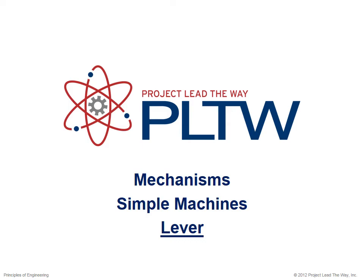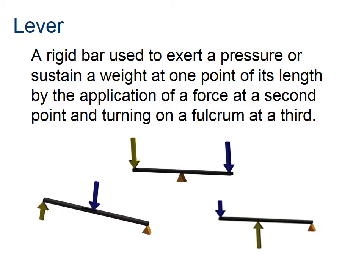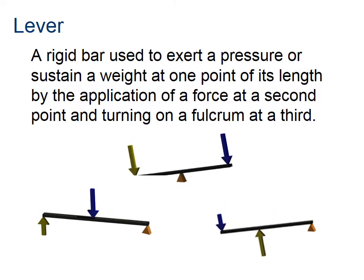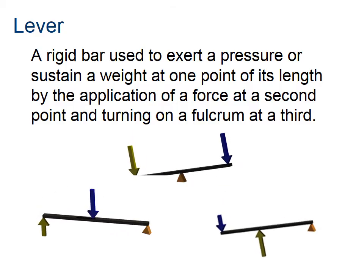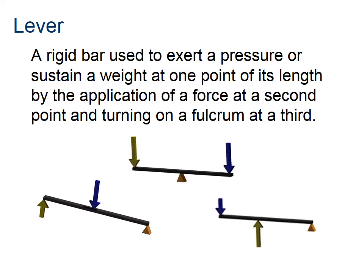In this presentation we are going to take a look at the simple machine called a lever, and we're also going to introduce the concept called efficiency. A lever is simply a rigid bar that's used to do some kind of work. You've all been on a seesaw or a teeter-totter, and that would be the top middle version. There are three different kinds of levers that we're going to explore.